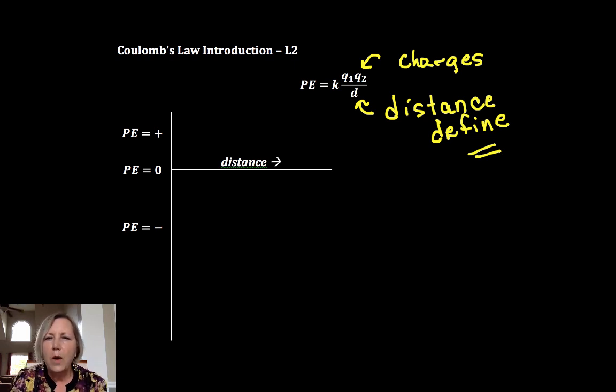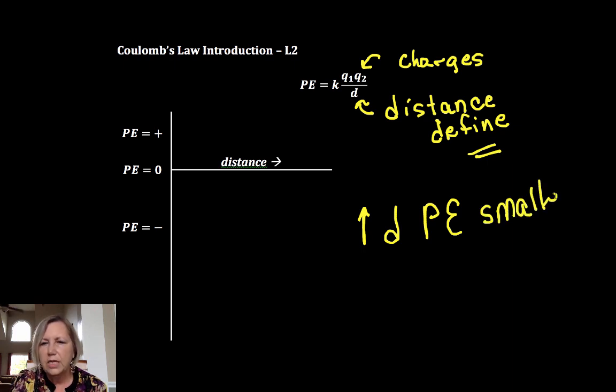So what we find qualitatively with Coulomb's Law is that if I increase the distance, I make the potential energy smaller, a smaller value, smaller magnitude. One of the tricky parts of this is how you discuss the potential energy, especially when it becomes a negative value.